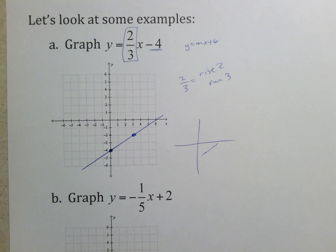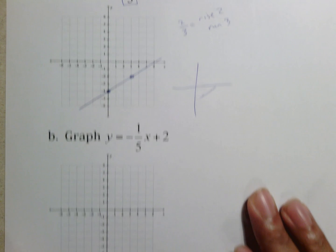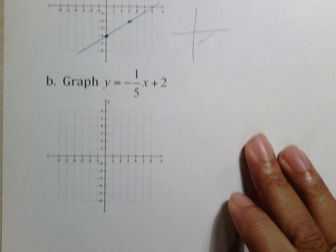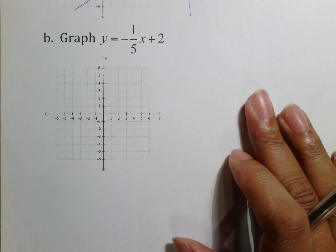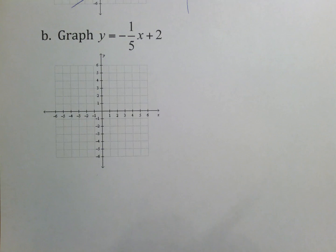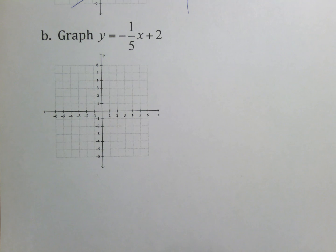If your line is not straight and definitely looks crooked, I will take partial credit. Make sure you draw your line correctly so you get all your credit and build the right habits for when you get to your next teacher.